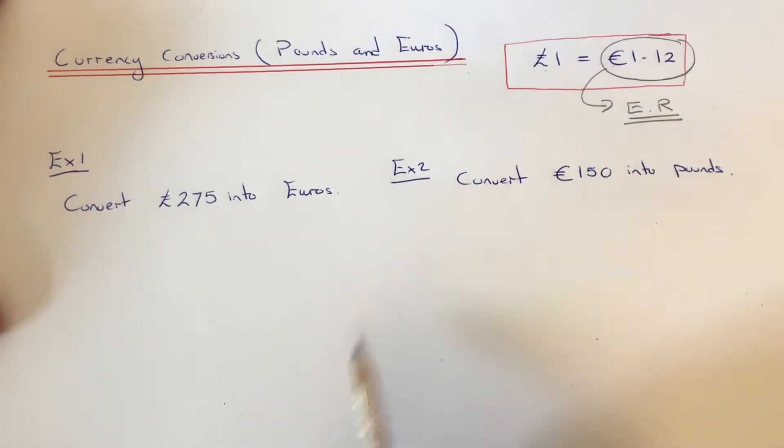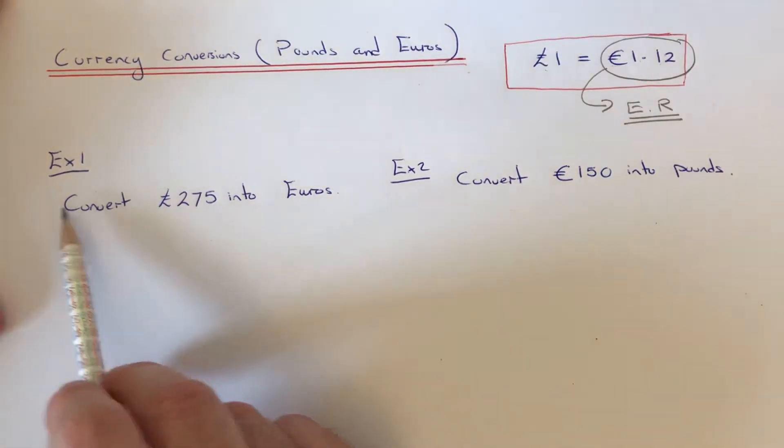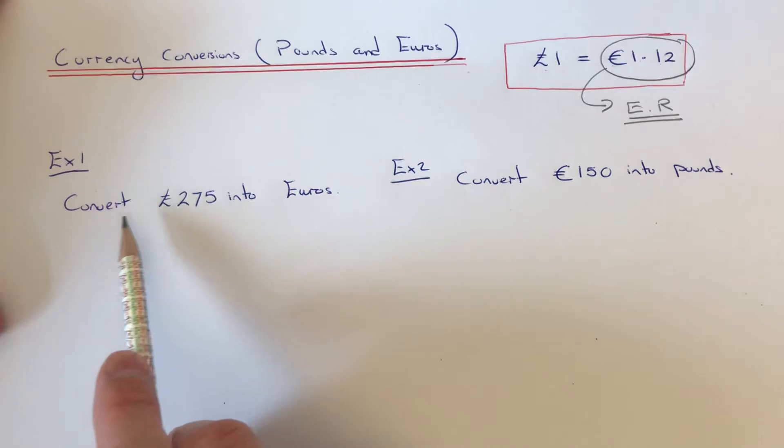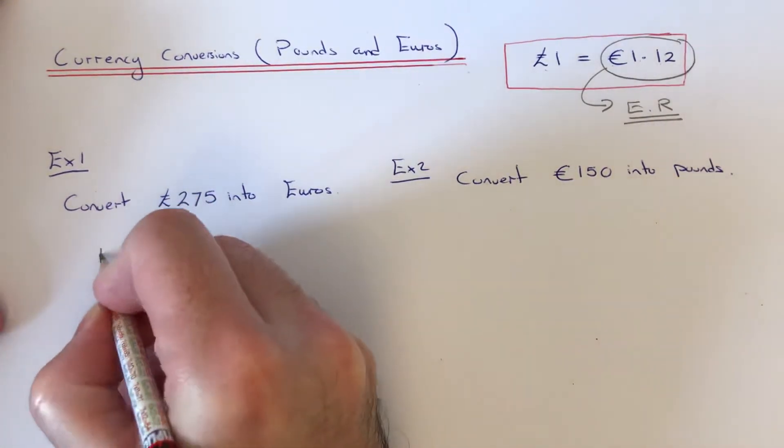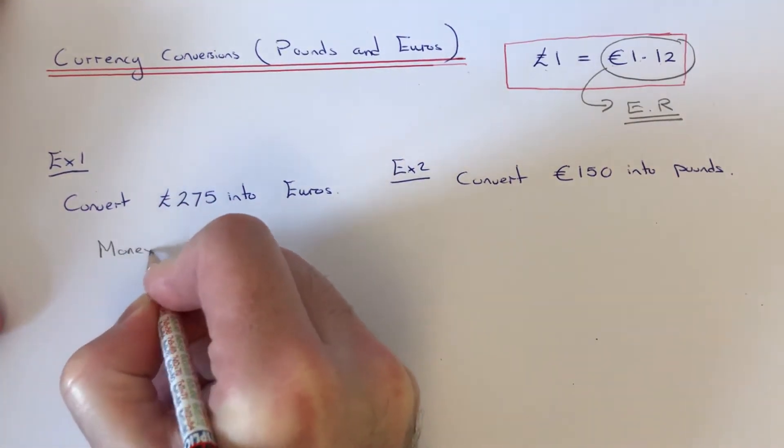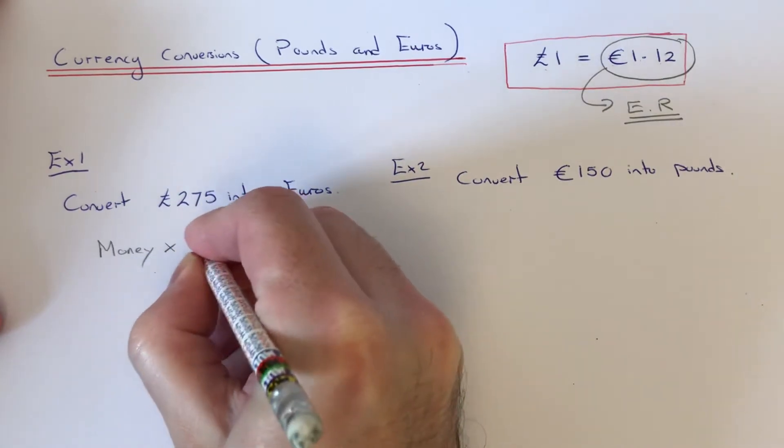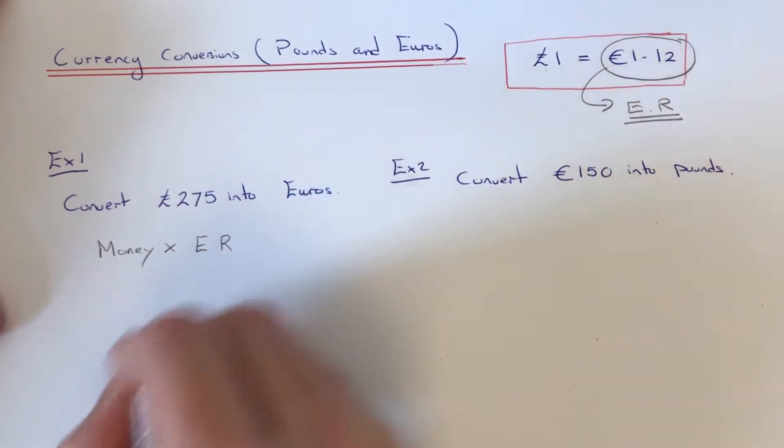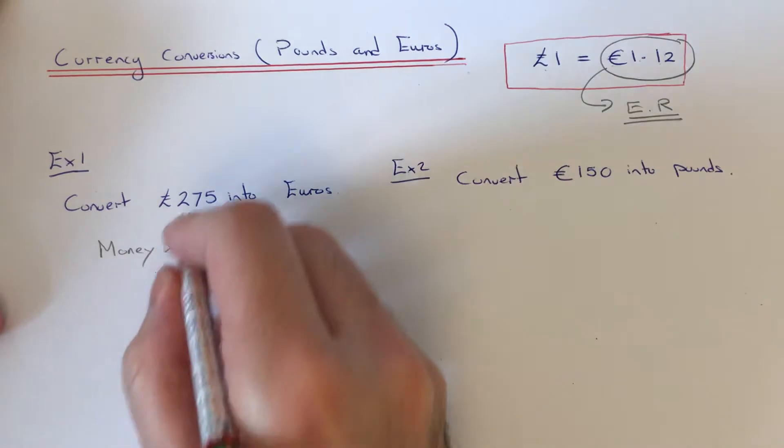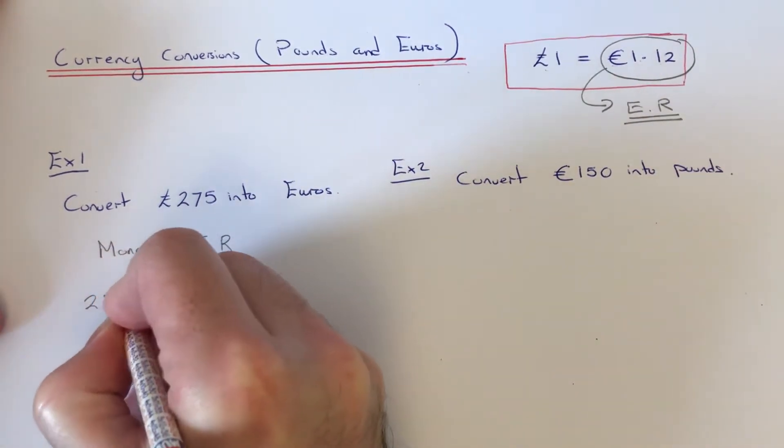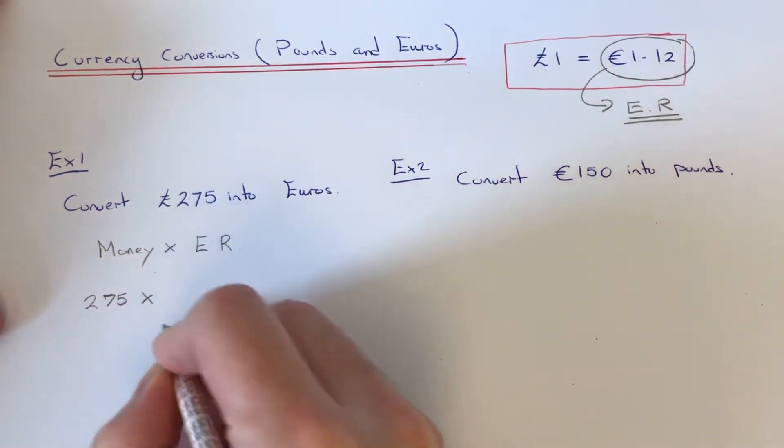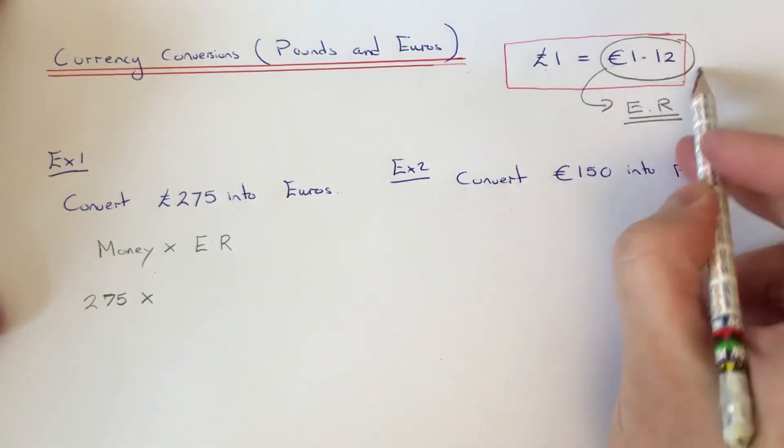Let's have a look at the two examples here. Example 1: we're going to convert £275 into euros. To do this, we're going to get our money and multiply it by the exchange rate number. Our money is £275 and we need to times that by the exchange rate between pounds and euros, that's €1.12.